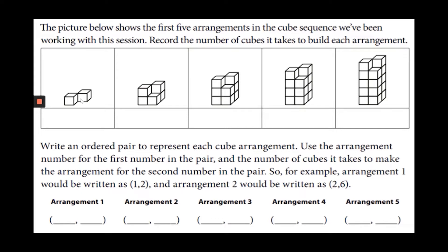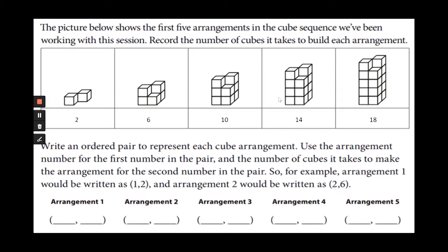The picture below shows the first five arrangements in the cube sequence. Record the number of cubes it takes to build each arrangement. Arrangement one is 2. Arrangement two added four on the bottom, so 6. Arrangement three added four more, so 10. Arrangement four added four more, so 14. What about the last one? Four more on the bottom — 18. Great!